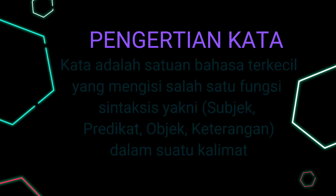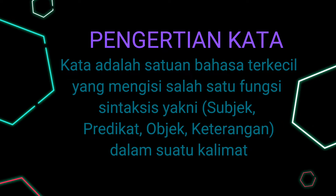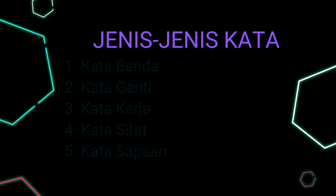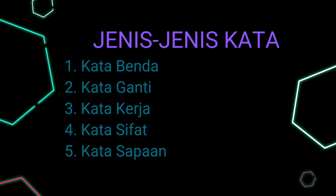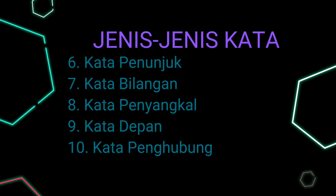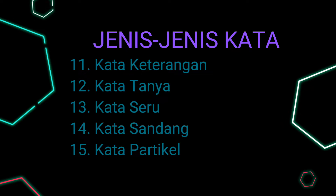Pengertian kata: kata adalah satuan bahasa terkecil yang mengisi salah satu fungsi sintaksis, yakni subjek, predikat, objek, dan keterangan dalam suatu kalimat. Jenis-jenis kata meliputi: kata benda, kata ganti, kata kerja, kata sifat, kata sapaan, kata penunjuk, kata bilangan, kata penyangkal, kata depan, kata penghubung, kata keterangan, kata tanya, kata seru, kata sandang, dan kata partikel.